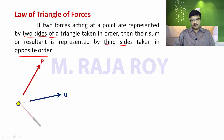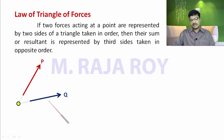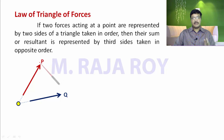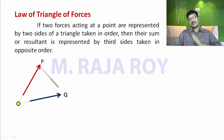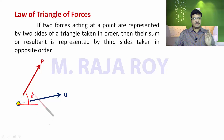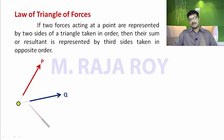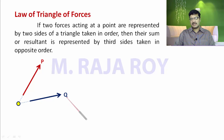These two forces have lines of action passing through a common point, so the condition is satisfied. You have to represent these two forces as two sides of a triangle. Let us assume P is 10 newtons — 10 newtons means you draw a 10 centimeter line, taking 1 newton equal to 1 centimeter. This force P is making 60 degrees with horizontal. This force Q is making 20 degrees with horizontal, and Q is 4 newtons, meaning 4 centimeters.